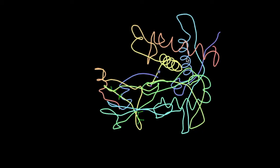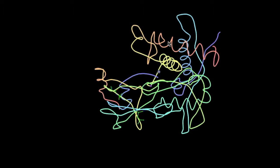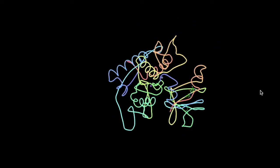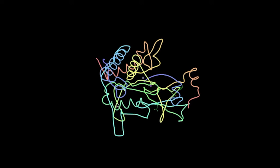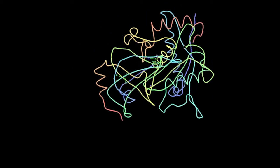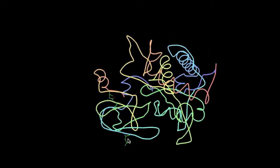We can also see the alpha helices and the beta strands in this structure. For example, this is an alpha helix, this is an alpha helix, and this one is an alpha helix. In addition, the SASB loop right here is a beta strand and the SESF connector is a beta strand.